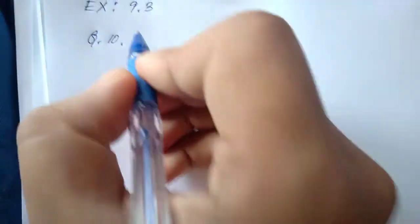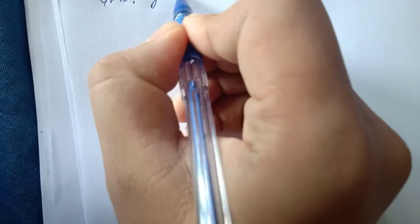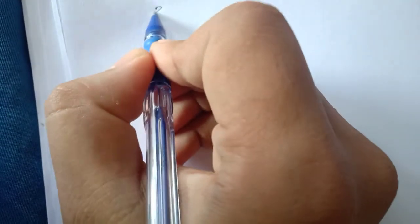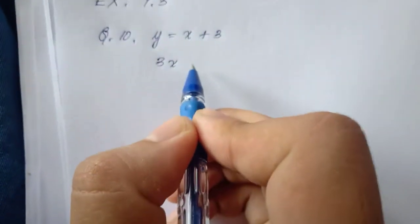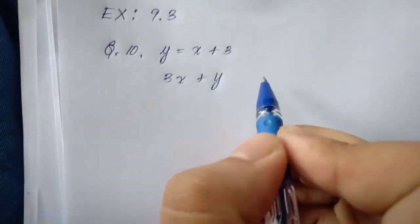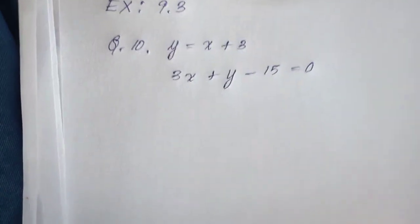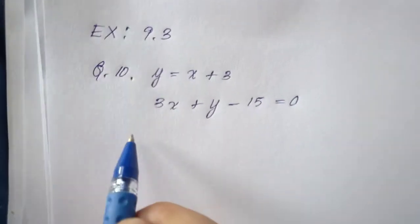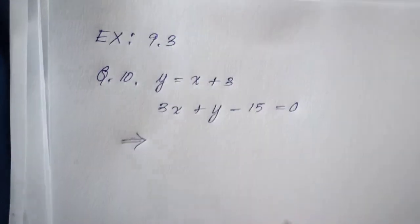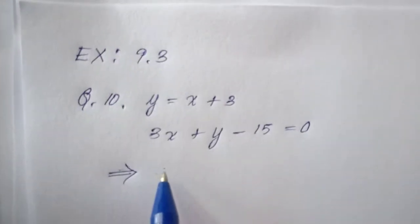So question number 10, what do we have here? We have y is equal to x plus 3, and the second equation is 3x plus y minus 15 equal to 0. As you can see from the equation, we have to make some change and arrangement here. So, solution.